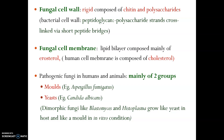The pathogenic fungi in humans and animals are mainly of two groups, classified for easy study of pathogenesis. They are the mold form and the yeast form. The main example of mold form is Aspergillus fumigatus, and the yeast form example is Candida albicans. There is also another class having both mold and yeast forms, called dimorphic fungi — examples are Blastomyces and Histoplasma. They grow like yeast in the host and like a mold in culture conditions.